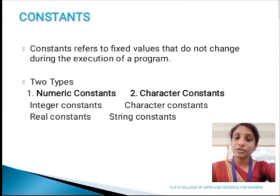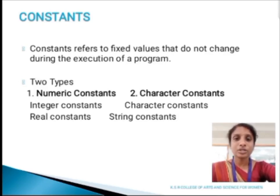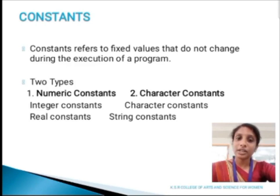Next, we are going to discuss about constants. A constant refers to a fixed value that doesn't change during the execution of the program. Constants are divided into two types: numeric constant and character constant. Numeric constant is further classified into integer constant and real constant. Character constant is further divided into character constant and string constant.